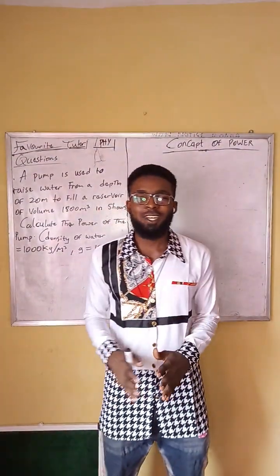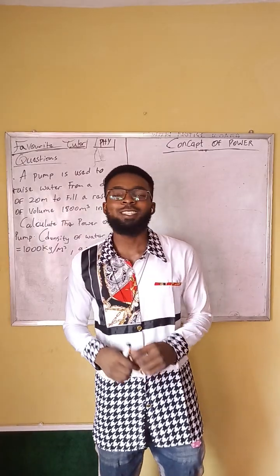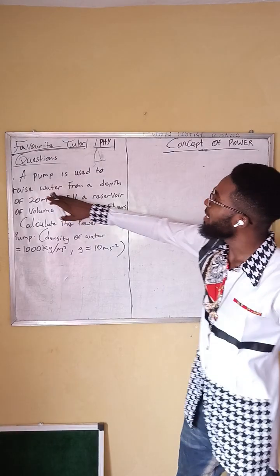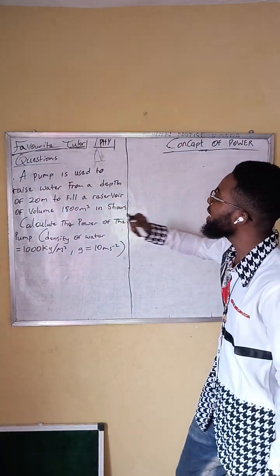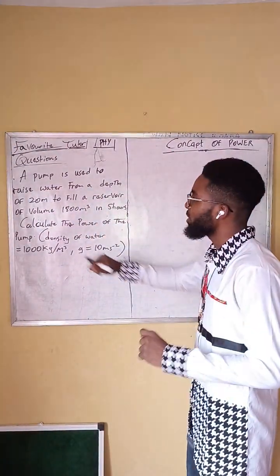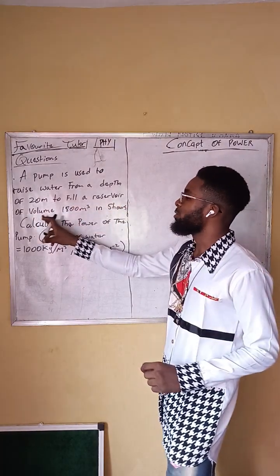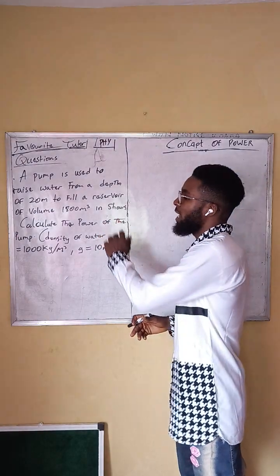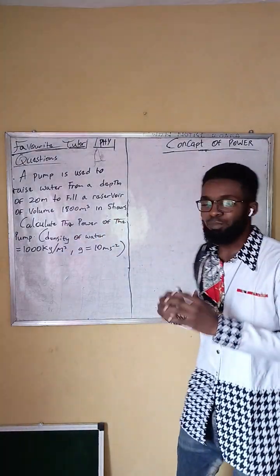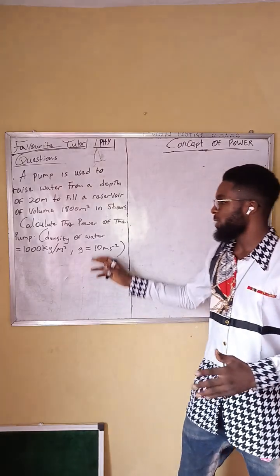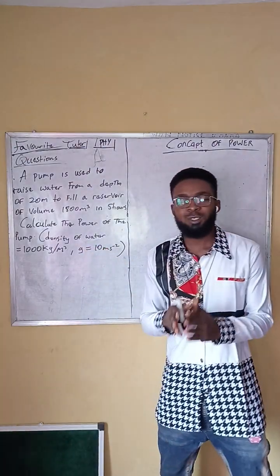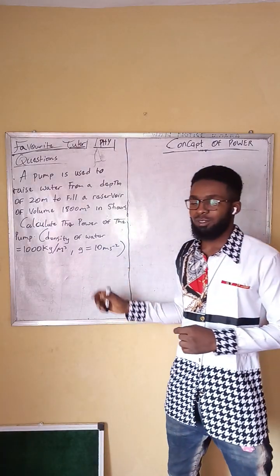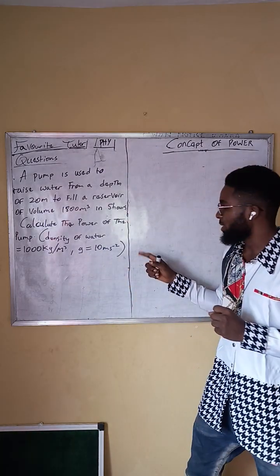Good everyone, this is your favorite tutorial, still on the concept of power. We have a question here: a pump is used to raise water from a depth of 20 meters to fill a reservoir of volume 1800 meter cube in five hours. Calculate the power of the pump. We are given the density of water as 1000 kilograms per meter cube and acceleration due to gravity equals 10 meter per second square.